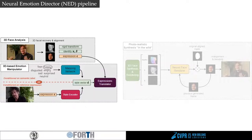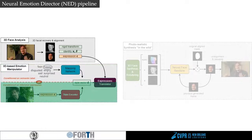We then pass the sequence of expression parameters to our GAN-based expression translator, which transforms them according to the conditional style vector. This vector is either generated by user-specified labels of emotions or extracted from an arbitrary reference video depicting a specific expressive style that we want to imitate.